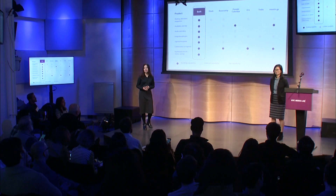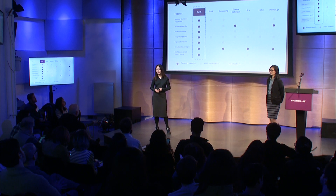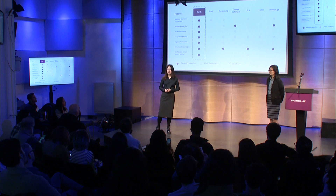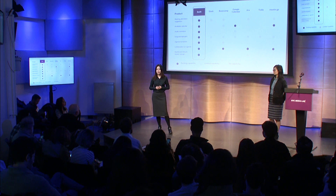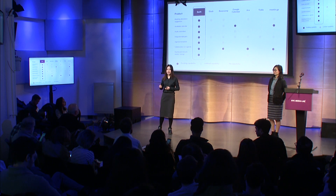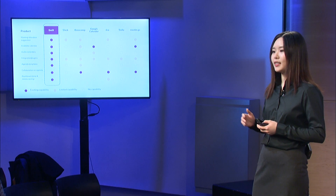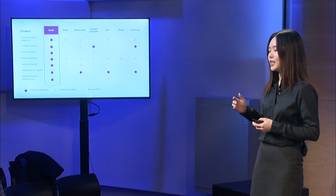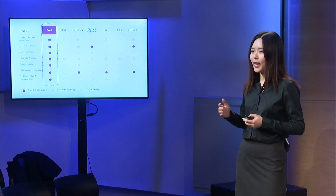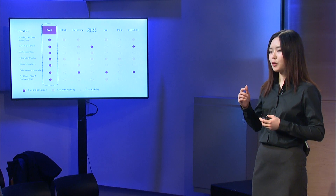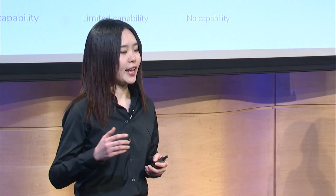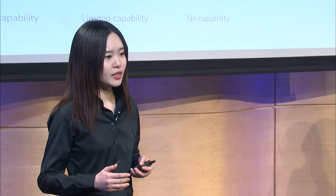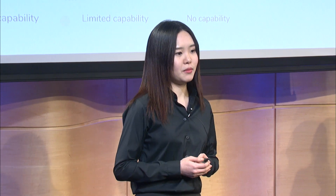Currently, our competitors in this space are focused on meeting management and team collaboration. Swift provides different value compared to the tools that project managers are already using. For providing meeting attendee suggestions, some competitors have limited capability by only offering each team member's contact info. Swift helps the meeting organizer choose the most relevant people for the meeting by considering the meeting content and everyone's professional experience, while also helping reduce the cost of each meeting.